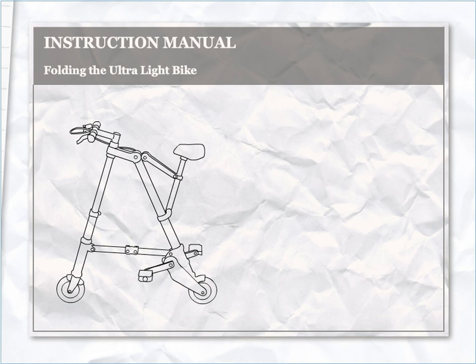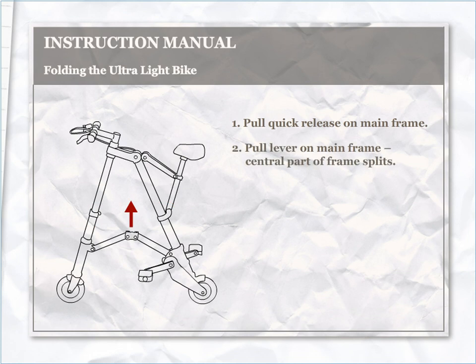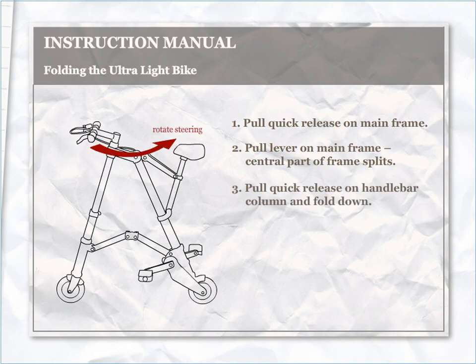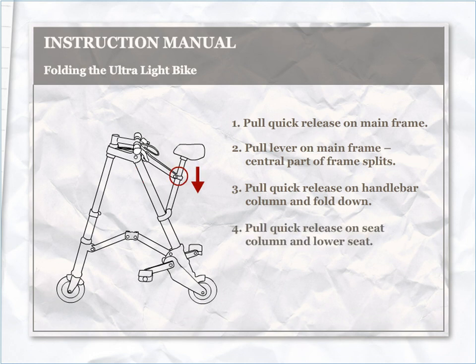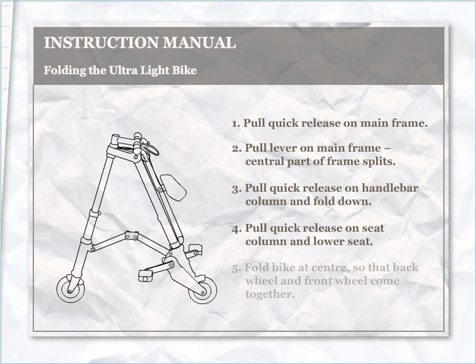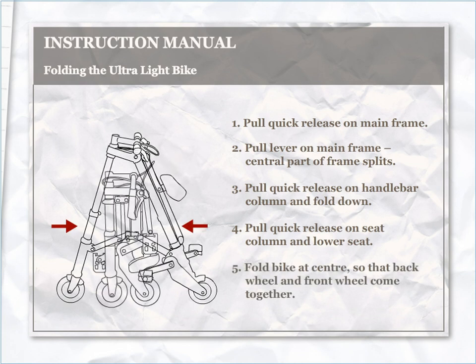Instructions for folding our ultra-light bike: Pull quick release on mainframe. Pull lever on mainframe — the central part of the frame splits. Pull quick release on handlebar column and fold down. Pull quick release on seat column and lower seat. Fold bike at centre so that the back wheel and front wheel come together.